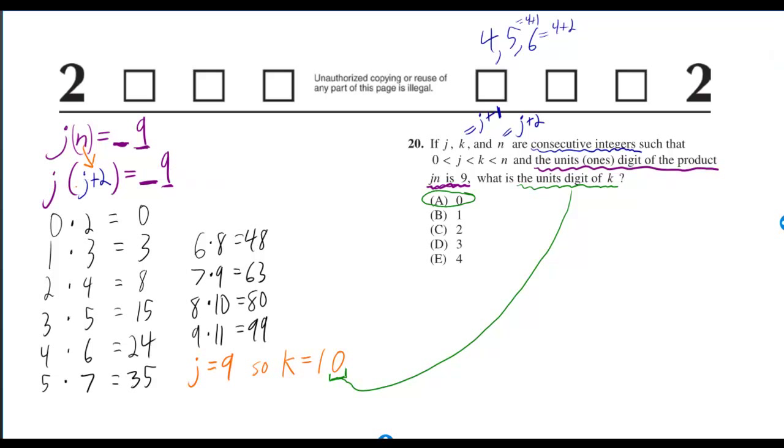So when you've got j times j plus 2, you can think of that as a number times a number that's 2 more than that number.